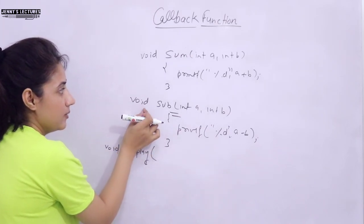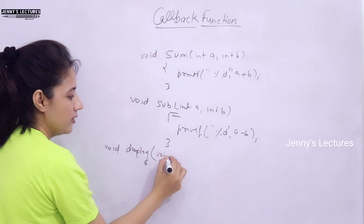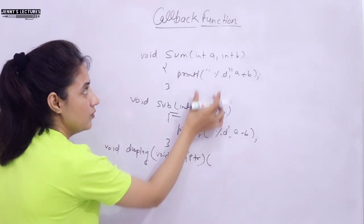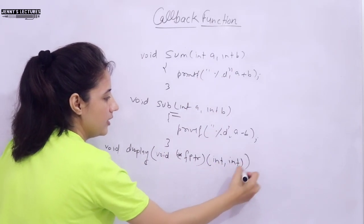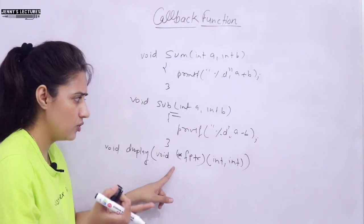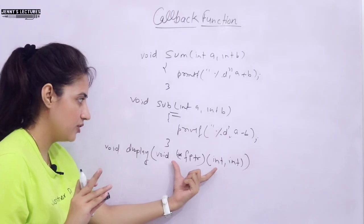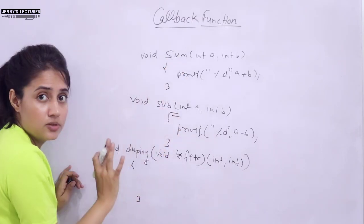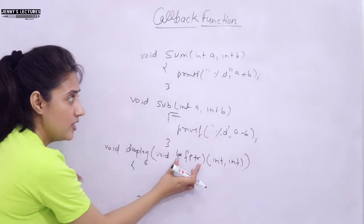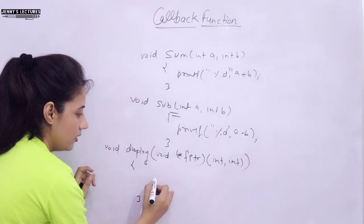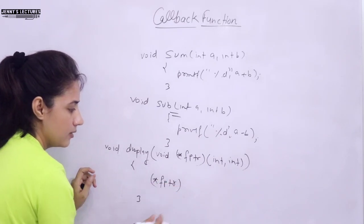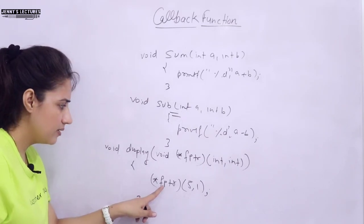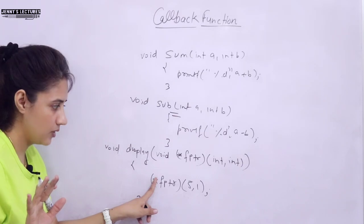Here we are taking a function pointer as an argument to the display function. From inside display, we call using the function pointer: (*fptr)(5, 1) — or simply fptr(5, 1), that also works. In the main function, we call display and pass the address of sum the first time, and the address of subtract the second time. You can write ampersand-sum or simply the function name — both mean you are passing the base address of that function.